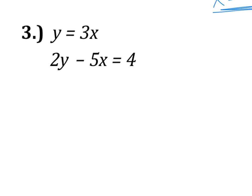For this example, we are given Y equals 3X. So we are going to take the 3X and substitute it in for our Y value. So we're going to replace the bottom equation, instead of 2Y, it's going to be 2, and then times 3X, because we're going to substitute that in, minus 5X equals 4.